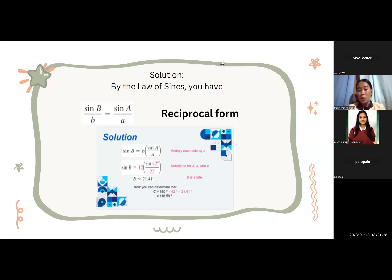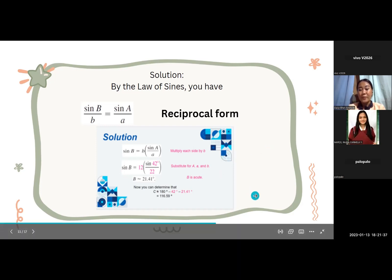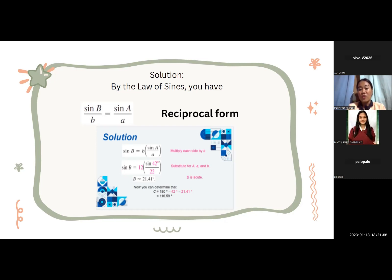Find the remaining side and angles. The solution here. By the law of sines, you have sine b over b is equal to sine a over a in reciprocal form. The solution is sine B is equal to b times sine A over a. Multiply each side by b. Then, sine B is equal to 12 times sine 42 over 22. So, we substitute a, A, and b.